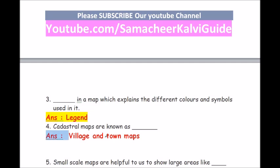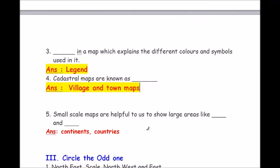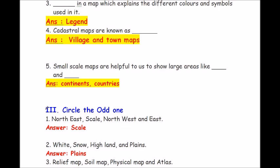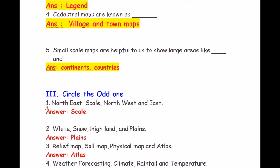Question 4: cadastral maps are known as dash. Answer is village and town maps. Question 5: the small scale maps are helpful to show large areas like dash and dash. Answer is continents and countries.